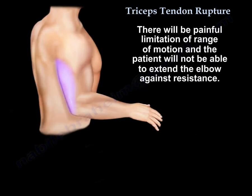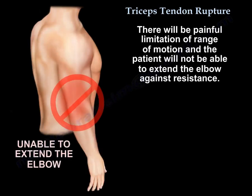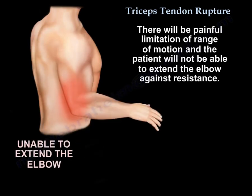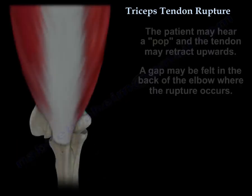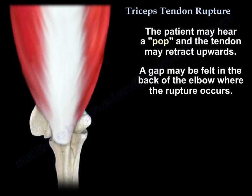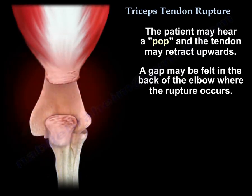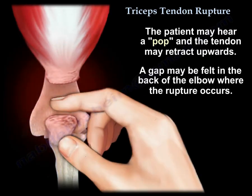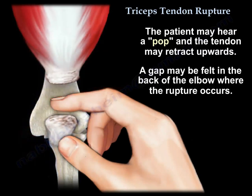There will be a painful limitation of the range of motion, and the patient will not be able to extend the elbow against resistance. The patient may hear a pop, and the tendon may retract upwards. A gap may be felt in the back of the elbow where the rupture occurs.